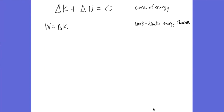In order to understand these graphs, let's start by looking at two things we've seen already. One of them is the conservation of energy, which says the change in kinetic energy plus the change in potential energy equals zero. In other words, if kinetic energy goes up, potential energy goes down by the same amount and vice versa.